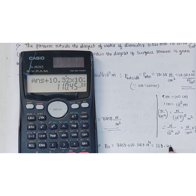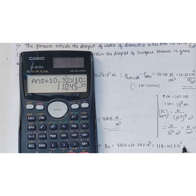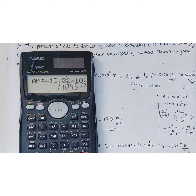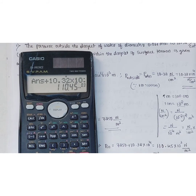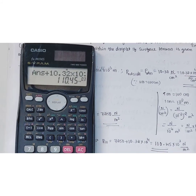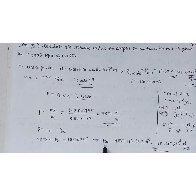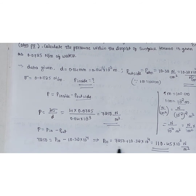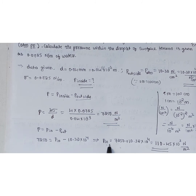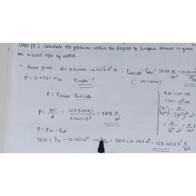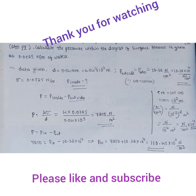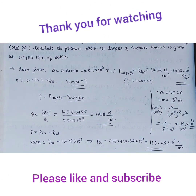Calculating: p_inside = 7250 + 103200 = 110450 N/m². This is the pressure within the droplet when subjected to a surface tension of 0.0725 N/m. This is how we solve problems related to surface tension. Thank you for watching.